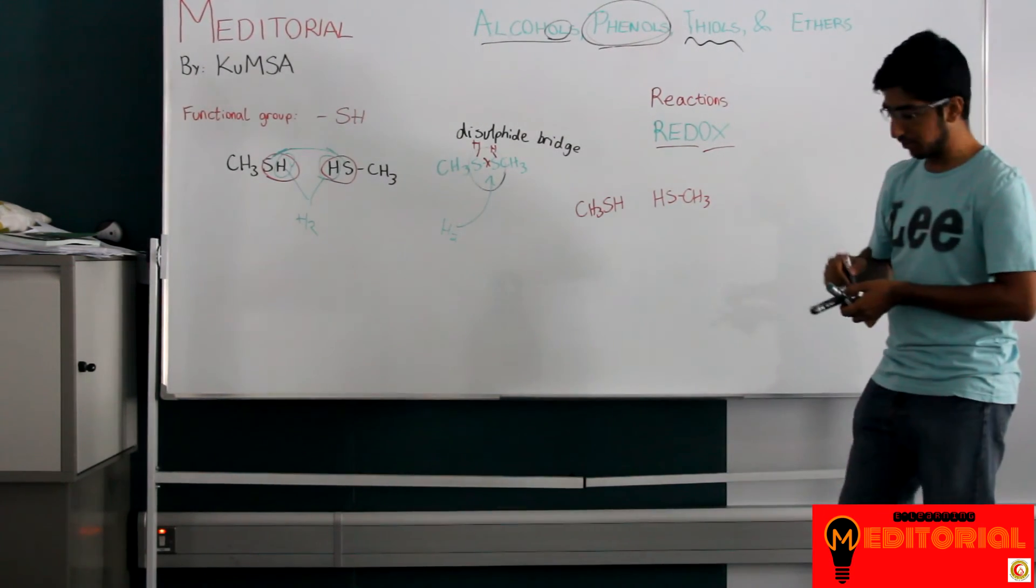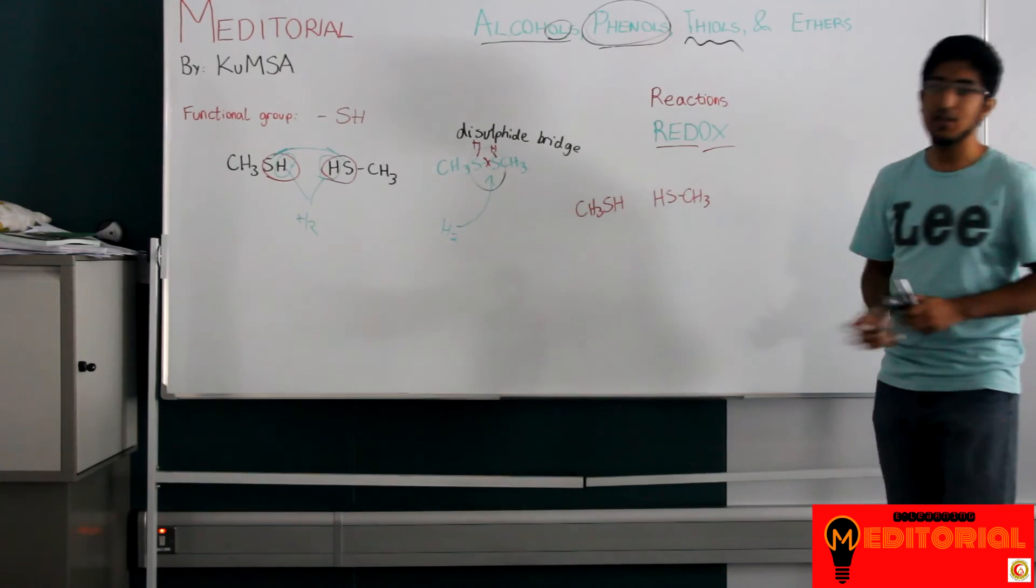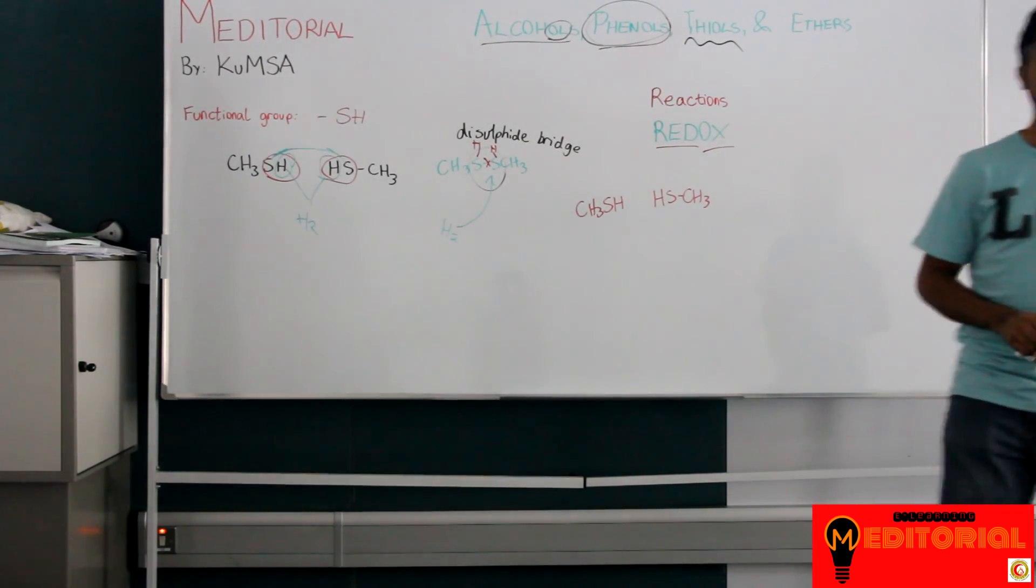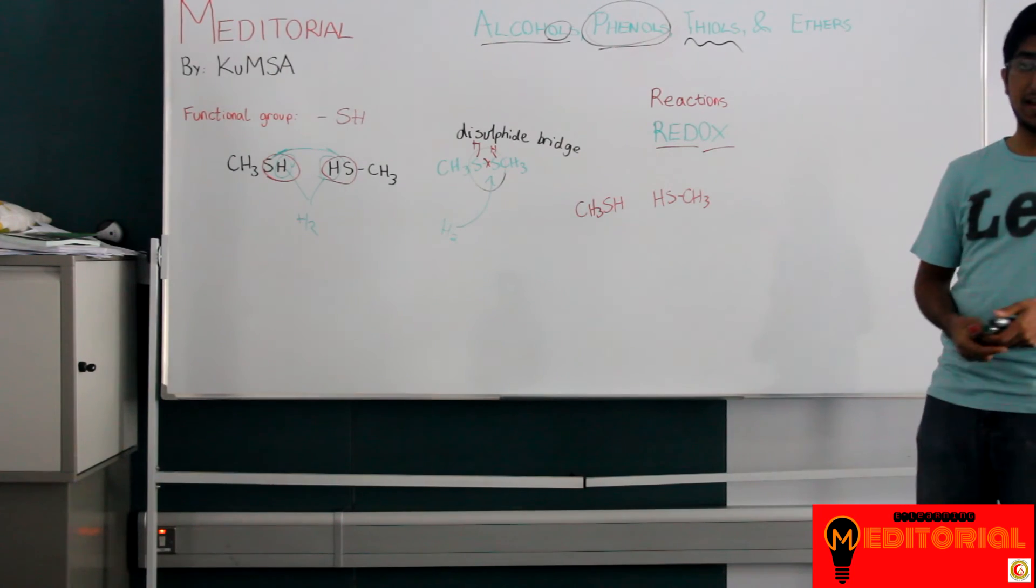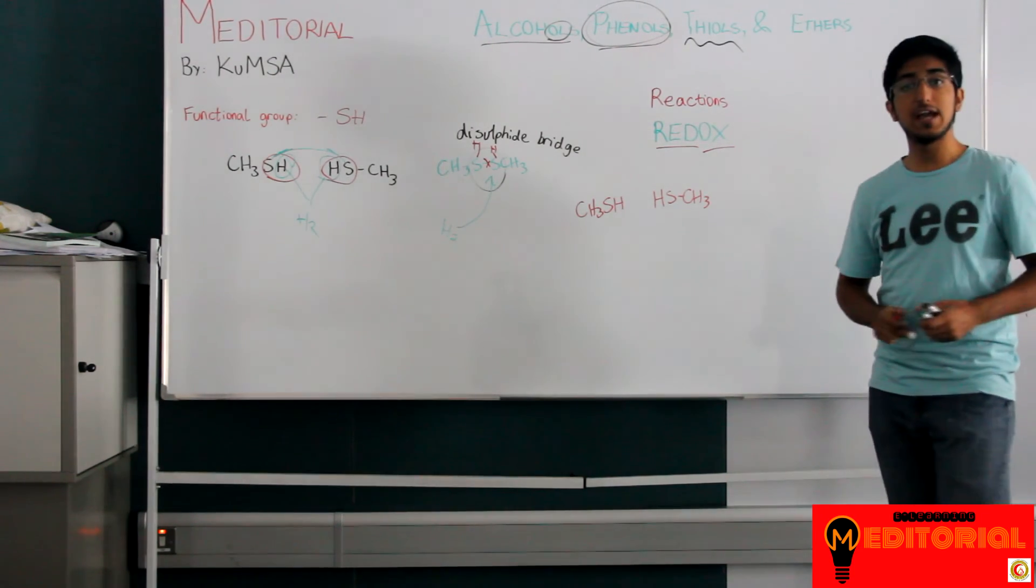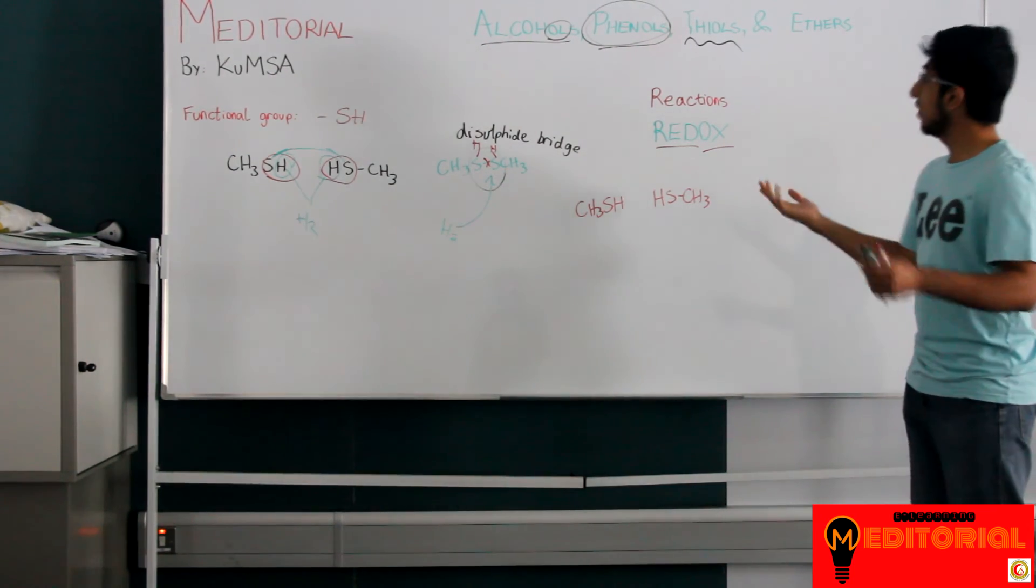Of course this is a very simple structure. You know, this is methyl thiol. It's only one carbon. The amino acid cysteine actually has many more carbons and it's a more complicated structure. You can find the structure online if you search for it. But that's all there is to thiols. And now on to ethers.